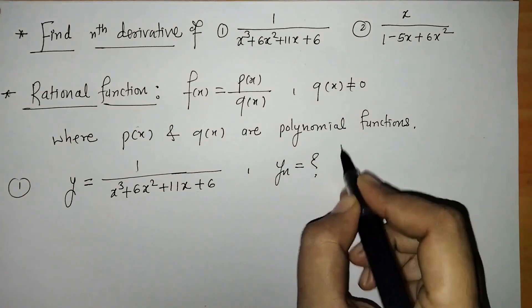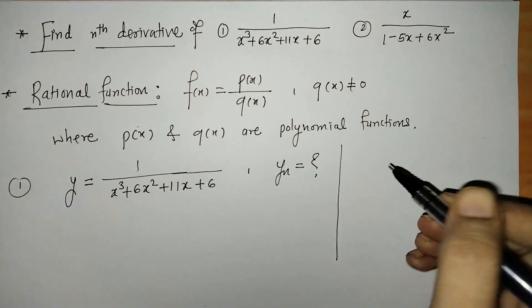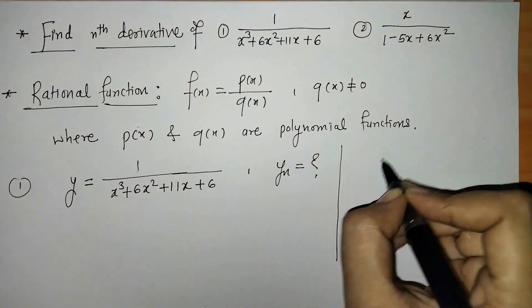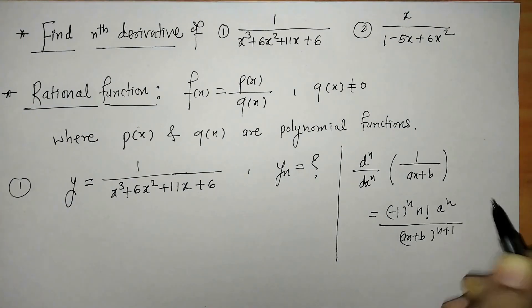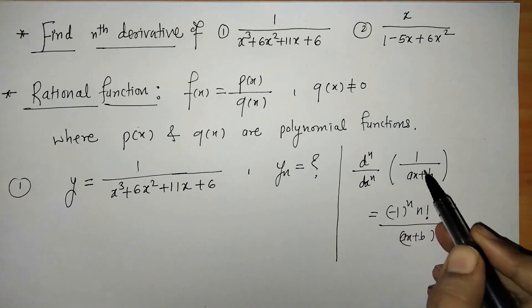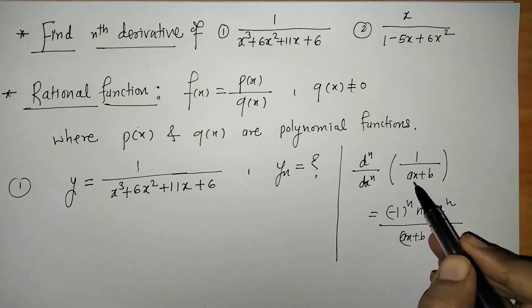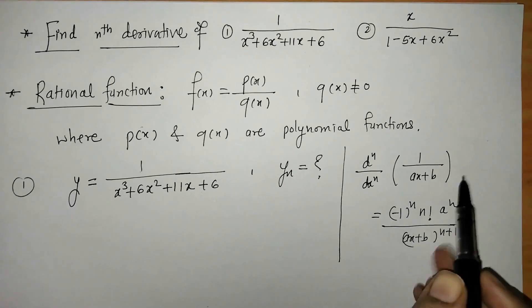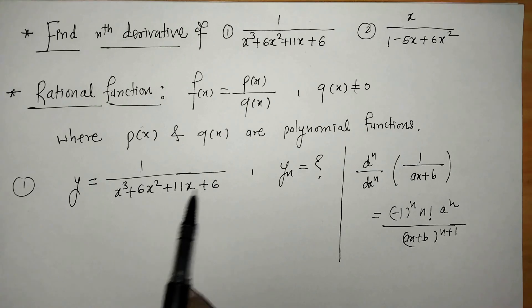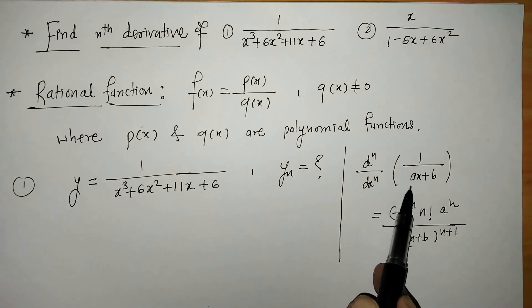We have seen one standard formula for finding the nth derivative of a rational function. Here we can check that this is the nth derivative of a rational function where in the denominator we have a polynomial of degree 1. So for finding the nth derivative of this rational function we have to make use of this formula.